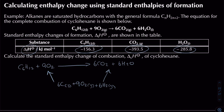For the reactants side: cyclohexane has ΔHf = minus 156.3 kJ/mol, and oxygen is zero because the enthalpy of formation of an element already in its standard state is zero — no energy is needed to go from oxygen to oxygen itself. So the reactants value is minus 156.3.